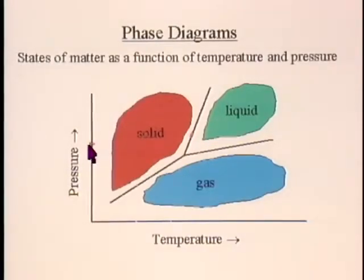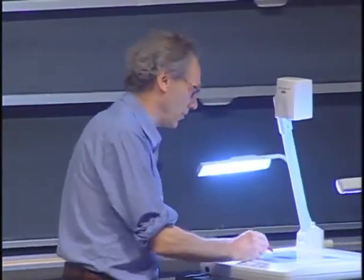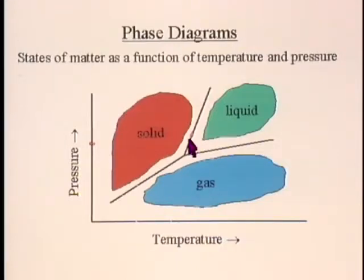Suppose this were one atmosphere. I take some ice, or you can take a piece of iron at one atmosphere — it's a very low temperature, it's a solid. And I start heating it up, but I keep the pressure at one atmosphere. It's a solid, it's still a solid. At this point it begins to melt — this will be the melting point. And when I keep heating it, the temperature will not go up until all the solid has been melted into a liquid.